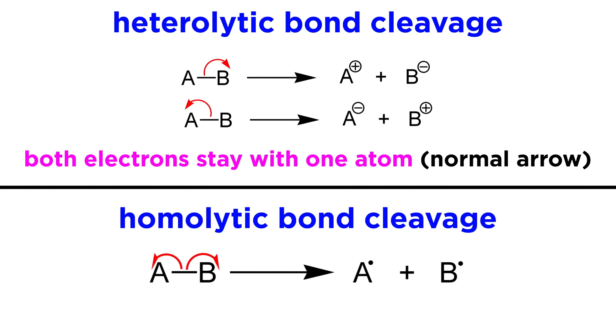Sometimes bonds will break homolytically. This means that each of the two atoms participating in the bond keeps one electron. Since normal arrows represent two electrons, to represent the motion of one electron we will use a single headed arrow like this.